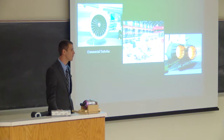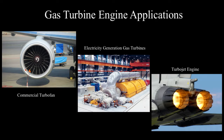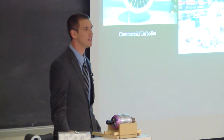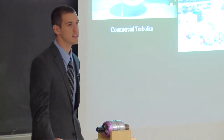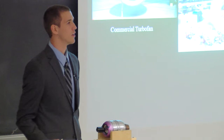First we have our commercial turbofan engine — these are the kind of engines you'll see if you look out the window on your plane. These usually spin around 10,000 to 20,000 RPM. Next is our electricity generation gas turbine engine. These are incredibly large and provide power to many cities in the United States, and they burn natural gas. Finally we have our turbojet engines — high performance gas turbine engines most famously used for military applications, as you can see here with the afterburners. Really fancy and fun to look at.